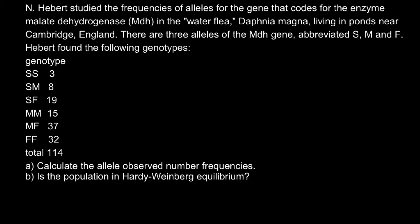Here is the problem. Ann Hebert studied the frequencies of alleles for the gene that codes for the enzyme molyde dihydrogenase in the water flea Daphnia magna living in the ponds near Cambridge, England. There are three alleles of this gene, abbreviated S, M, and F. Hebert found the following genotypes. Three alleles can make six different genotypes, and the total number of individuals studied were 114.